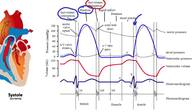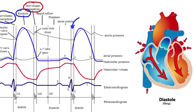During isovolumetric relaxation, the valves are closed and there's a significant drop in pressure while ventricular volume stays constant. Then once that's done, the ventricles are relaxed and the atria are also relaxed, so we get ventricular filling — blood is coming back from the body and from the lungs and entering the ventricle. The ventricular volume starts going up again, increasing until we get that P wave again, which causes atrial depolarization, and the cycle continues.